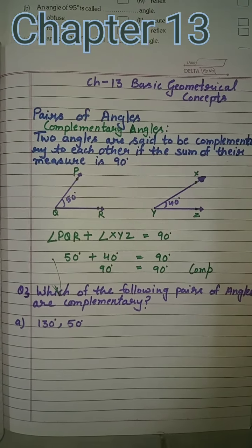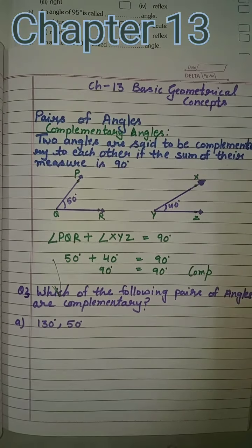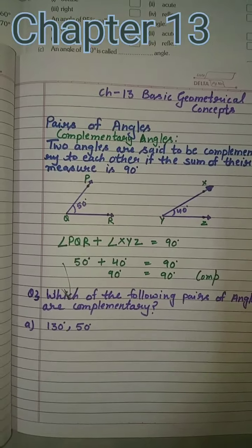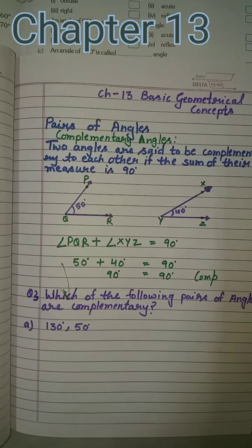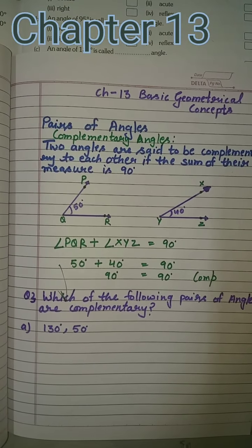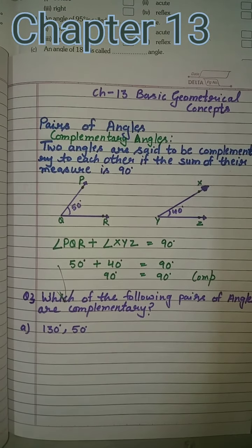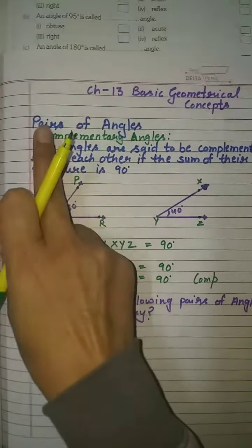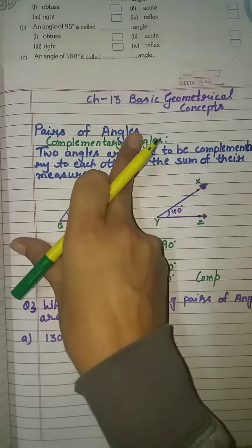Last time we have done about point, line, ray, line segment, and how many types of angles. Now today we will do pairs of angles.